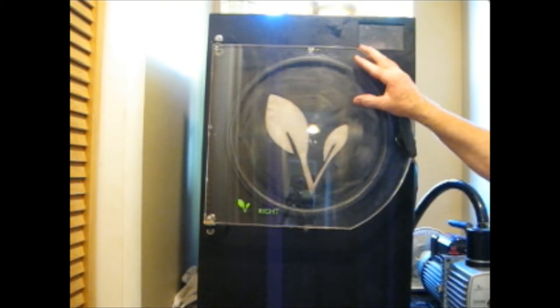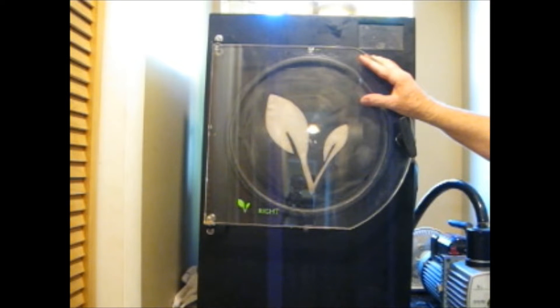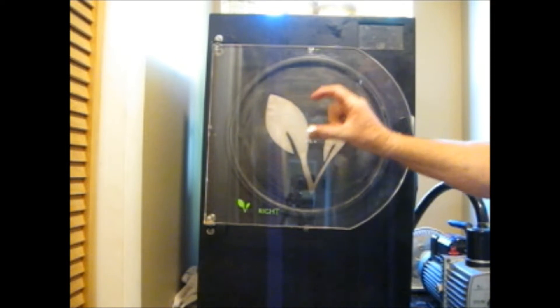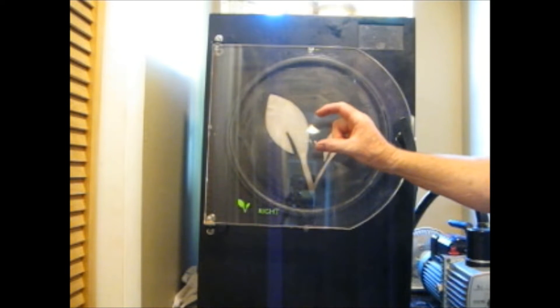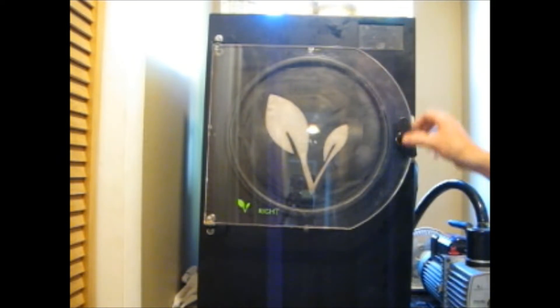When I first got my Harvest Right freeze dryer and I opened up the back end, I was really impressed. They had two inches of polyurethane foam around the chamber and two inches is the same as an R13 insulation value. I thought, boy, that is really good engineering.